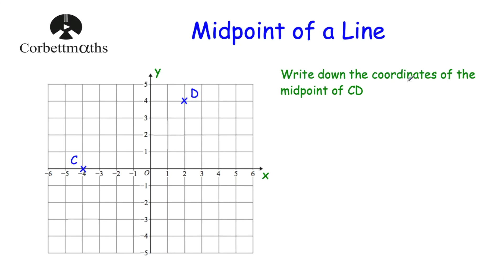Our next question says: write down the coordinates of the midpoint of CD. We've got point C at (-4, 0) and point D at (2, 4). Joining them up and using inspection, the midpoint would be at (-1, 2). You can see that midpoint quite nicely there.